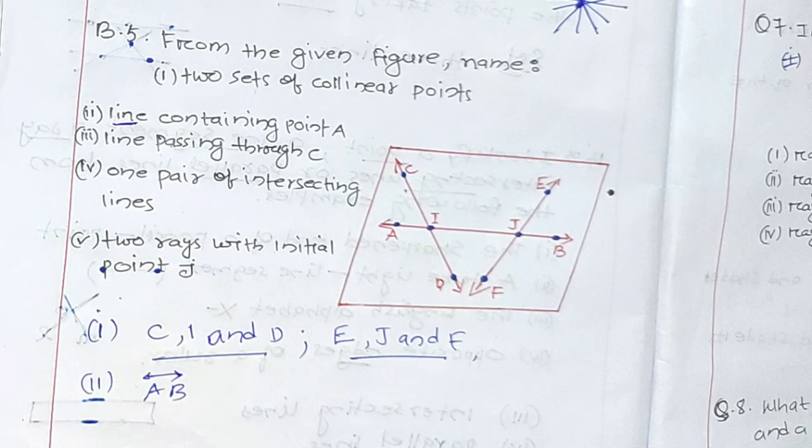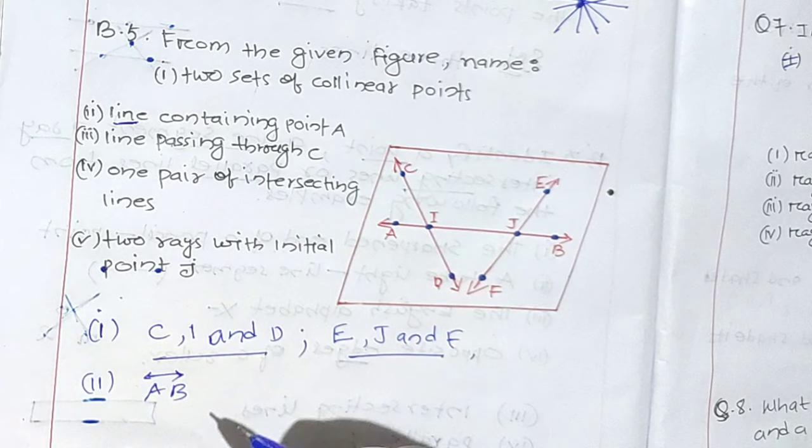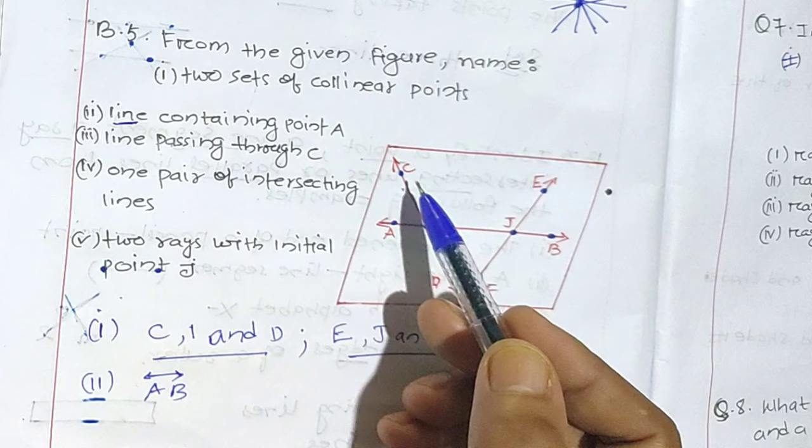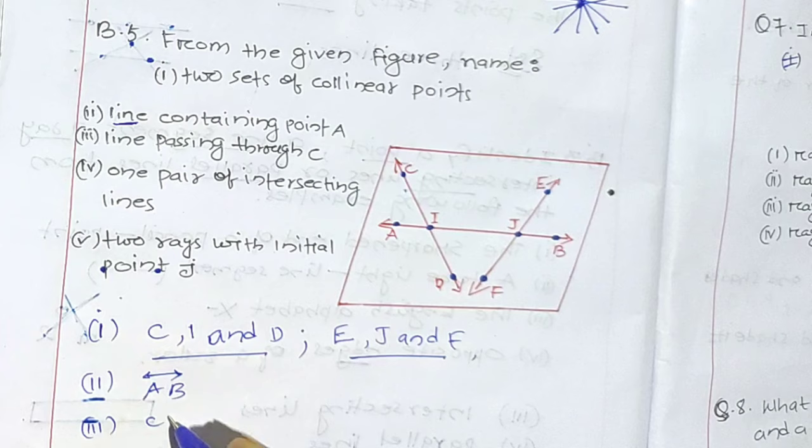Now they have the line passing through C. Where is C? C is here. So the line passing through C will be C and D. So question number 3 will be C, D. Again they are talking about the line, so the line has to be written with the line sign — line CD.